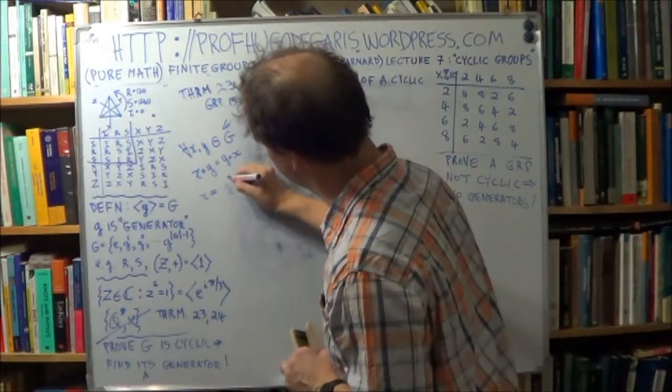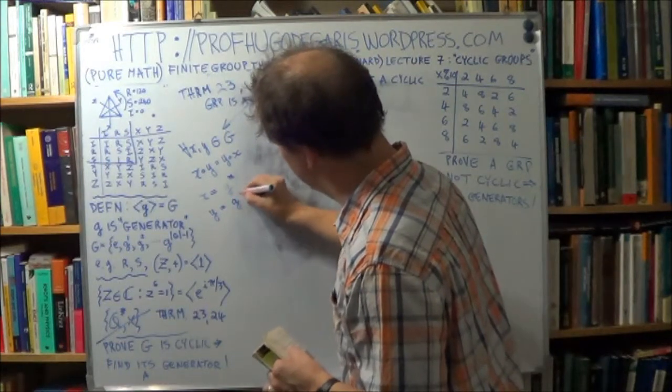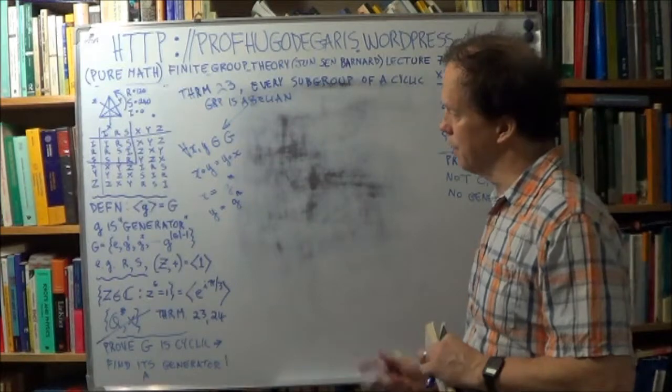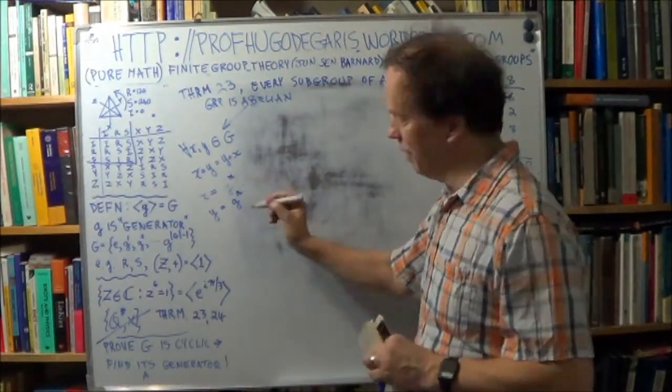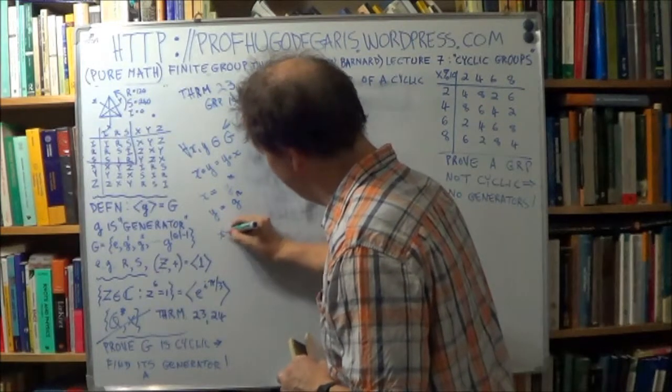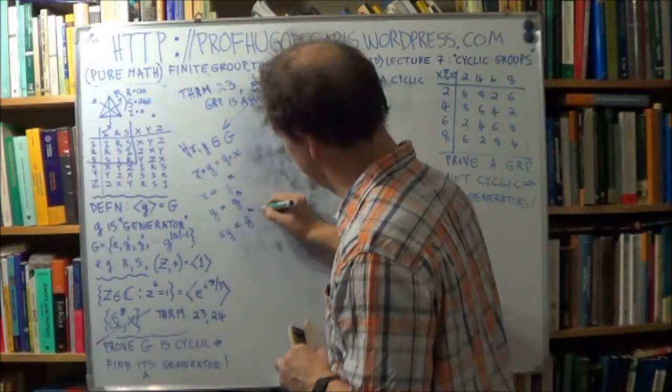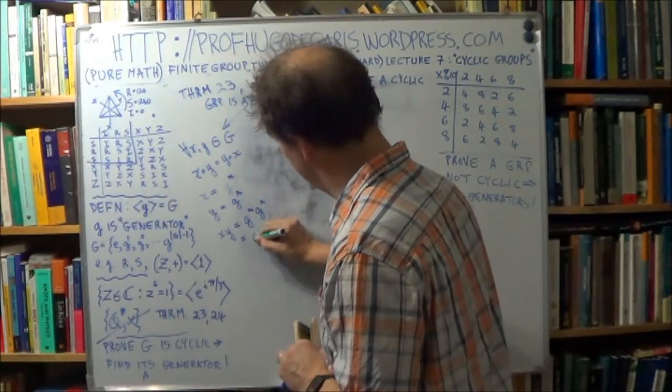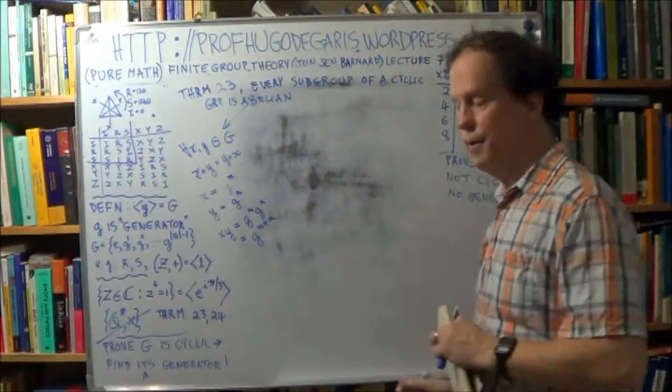So g to, let's say, m, and y will be g to the n, let's say. m and n are some integer, right? Some integer power. Well, you may be getting to see it already. So xy, just multiply these two, so it's g^m, g^n. And that's g^(m+n). Just, you know, just exponents.